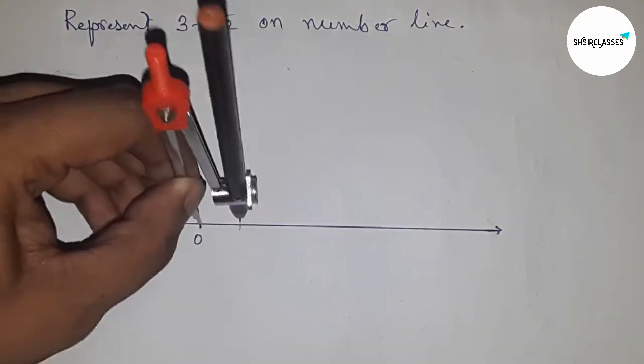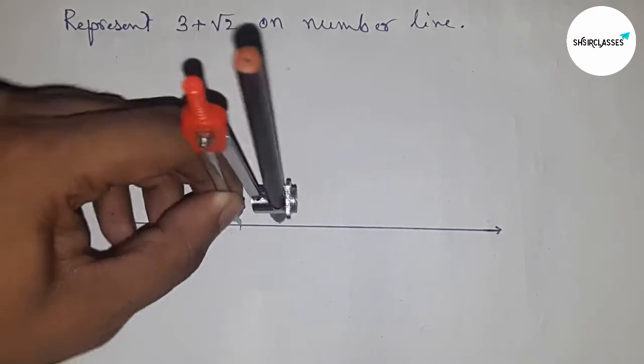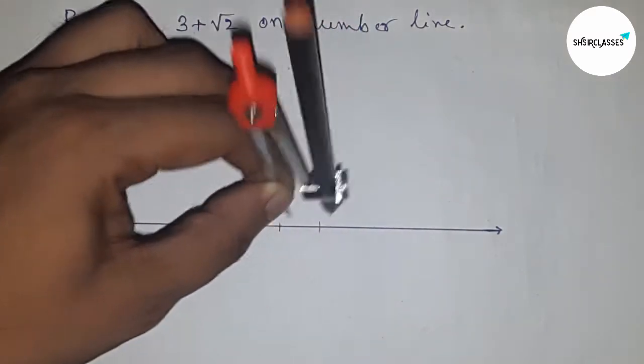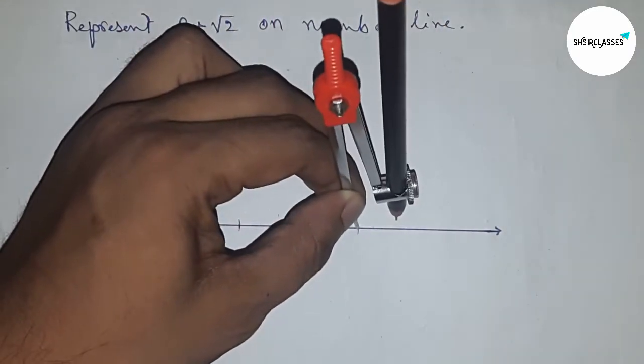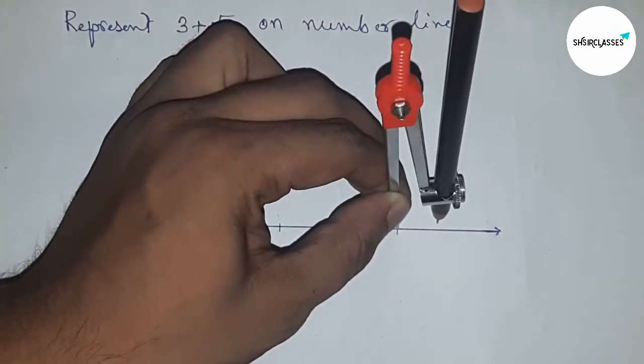Next, using a compass with unit length and mark the numbers on the line. If you want to use a scale you can use it, but here I think compass is better to use.